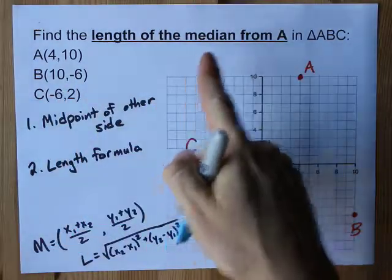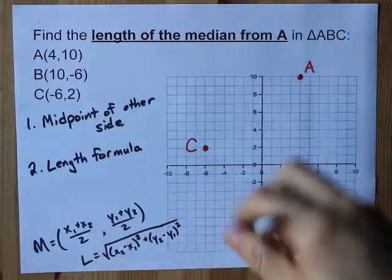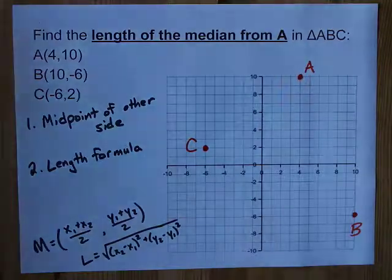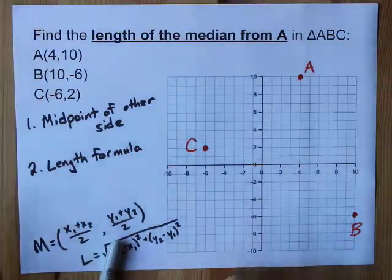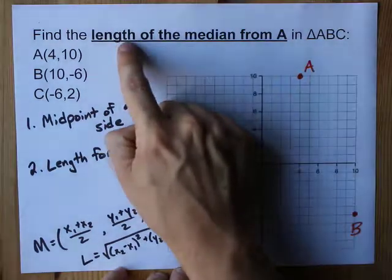Find the length of the median from point A in a triangle that we're given. Now I've plotted the points A, B, and C here because you don't need me wasting your time watching me do that.